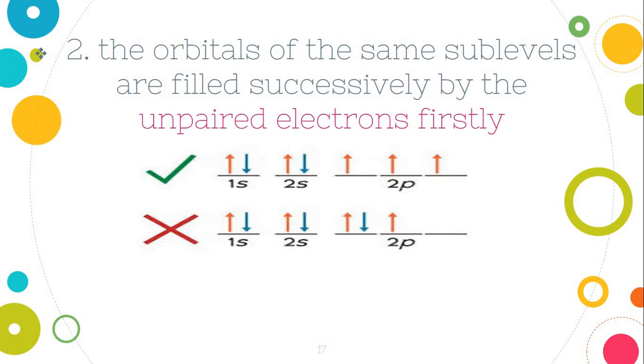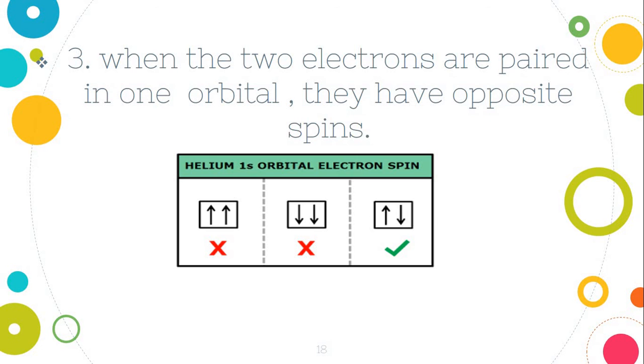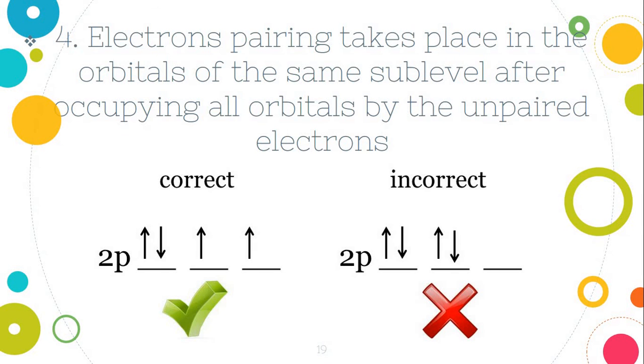Number 2. The orbitals of the same sublevels are filled successfully by unpaired electrons firstly. When the two electrons are paired in one orbital, they have the opposite spins.